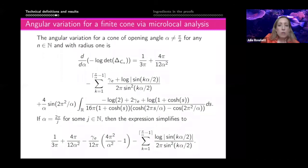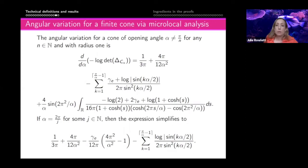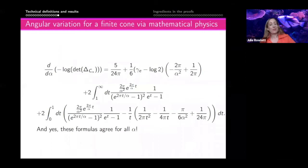Our last results concern finite cones: we want to change the cone angle. On one hand, our microlocal analysis method yields one formula; on the other hand, our mathematical physics style approach yields another formula. Again, these are actually equal for all α in the range considered.